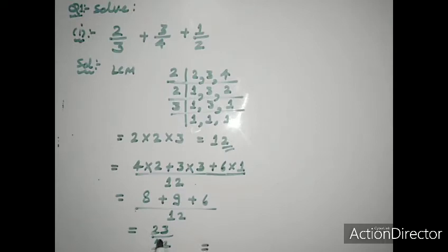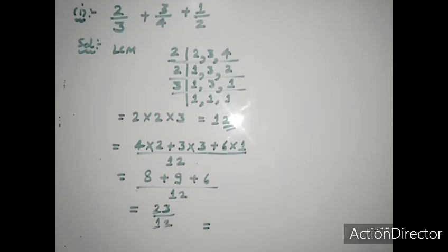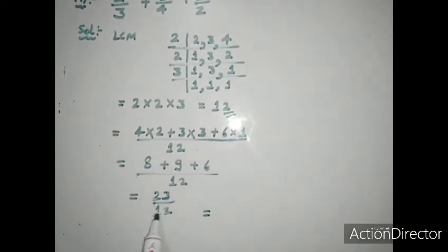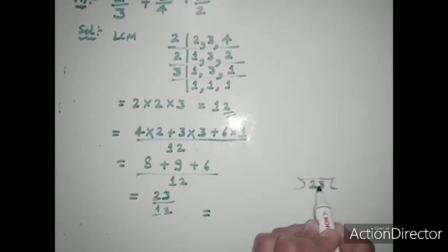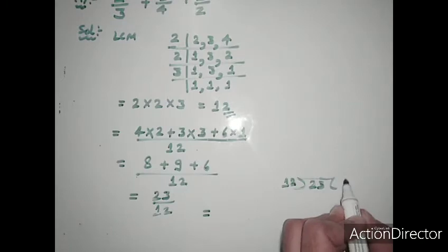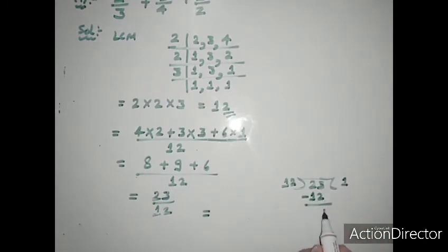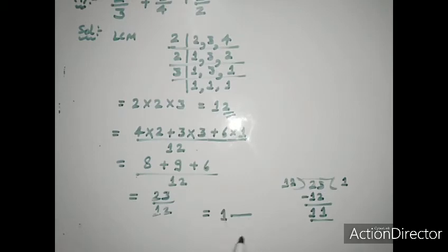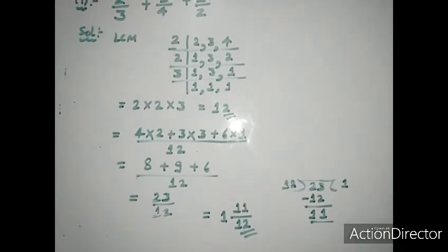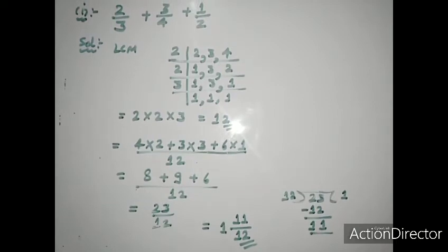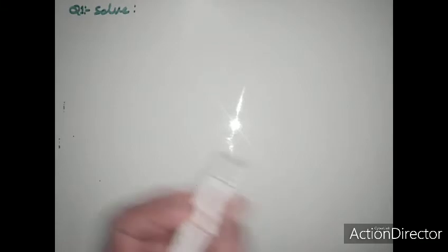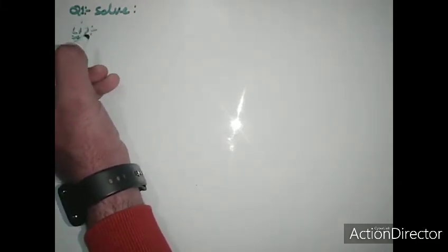This is an improper fraction because the numerator 23 is greater than the denominator 12. We convert it to mixed fraction form by dividing 23 by 12: 12 ones are 12, remainder 11. So we write 1 whole 11 upon 12 as the sum of 2/3 + 3/4 + 1/2.